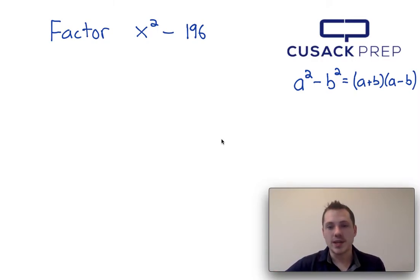Now you may or may not know this, but 169 is a perfect square. It is 14 squared. And x squared is also a perfect square.